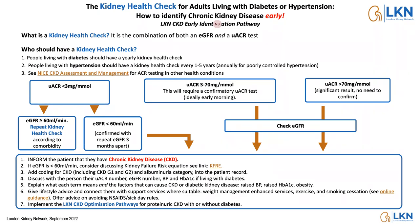Looking at the flow chart: if someone's urine ACR is less than three, that would be defined as okay, and based on their blood tests you'd define them as having CKD stage three or beyond if their eGFR was less than 60, or CKD stage one or two if eGFR was greater than 60. If the urinary albumin ratio is between three and 70, that needs to be confirmed with a follow-up test, but they would already be defined as having CKD. You'd also be checking eGFR for appropriate staging and coding.